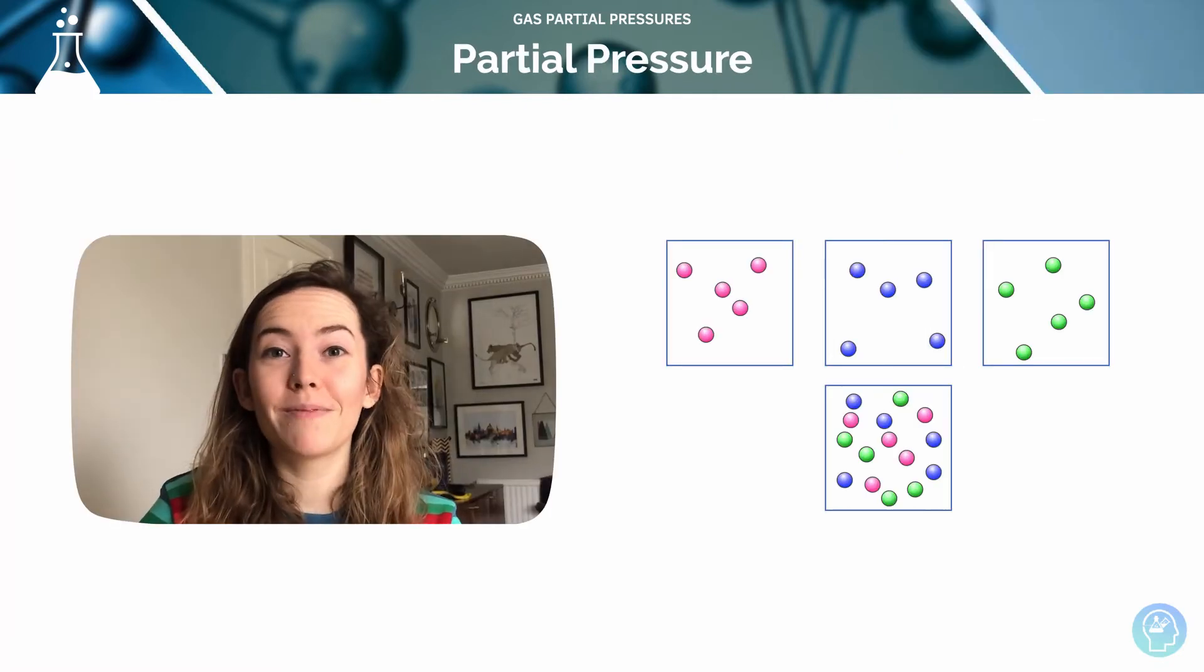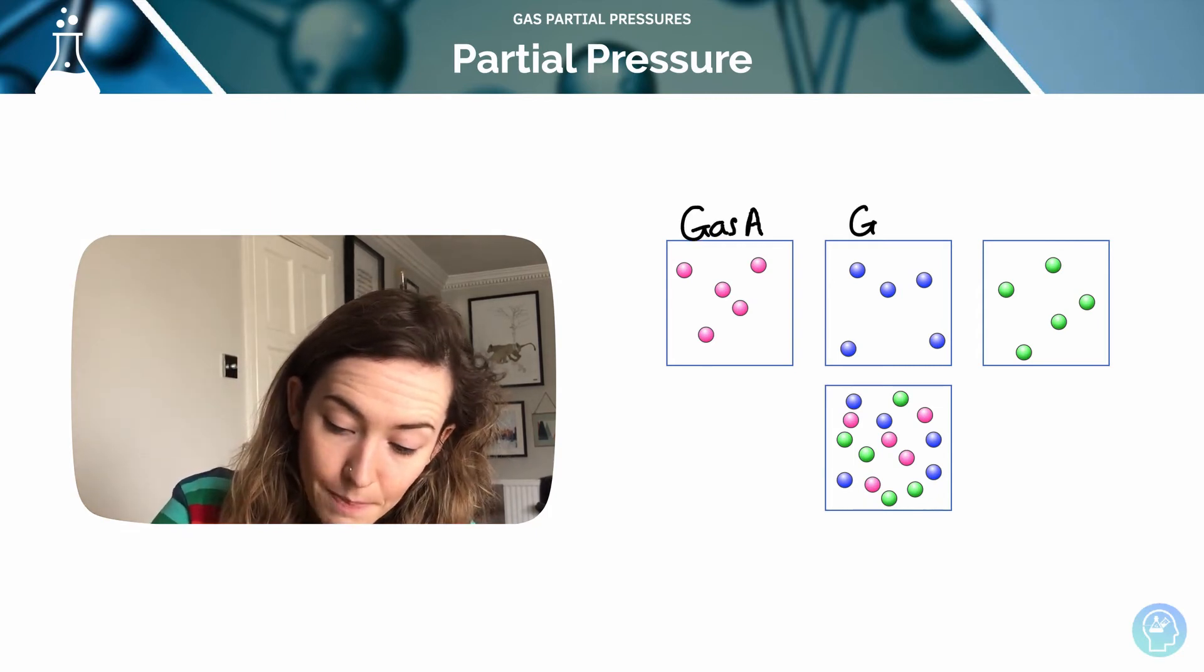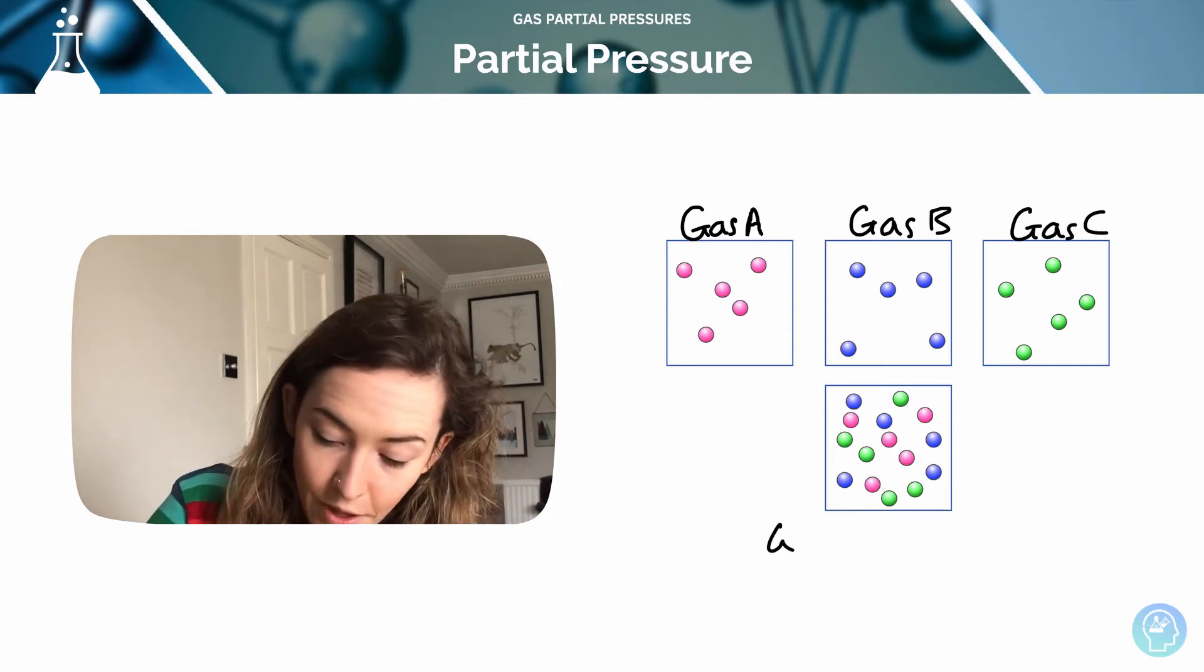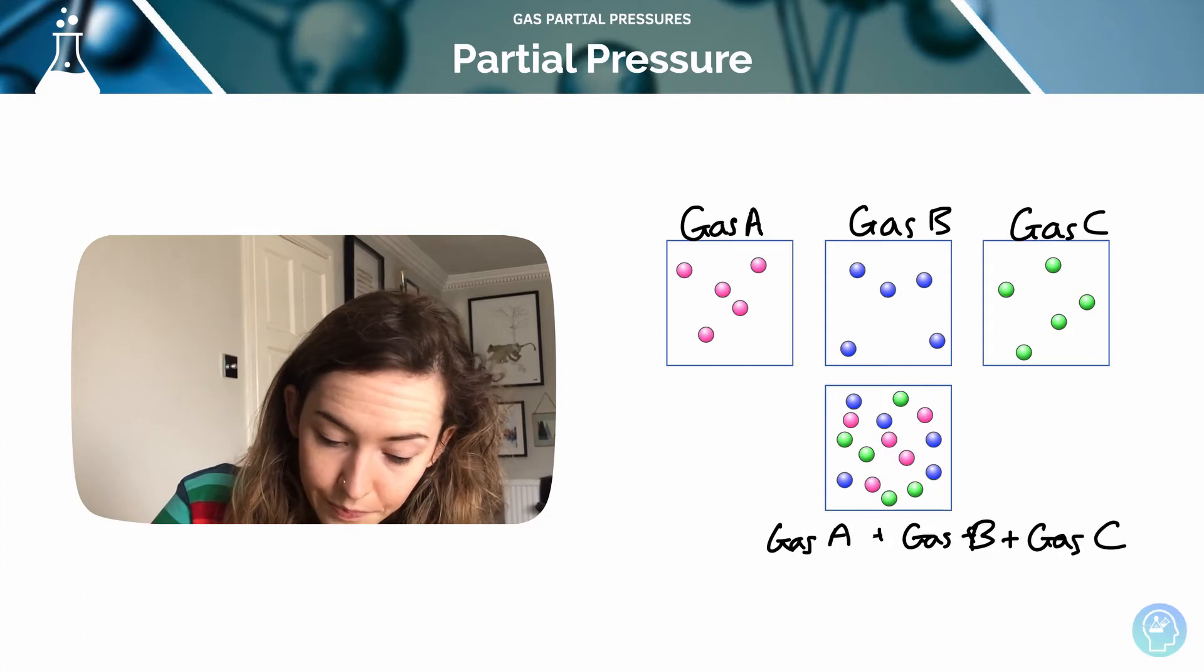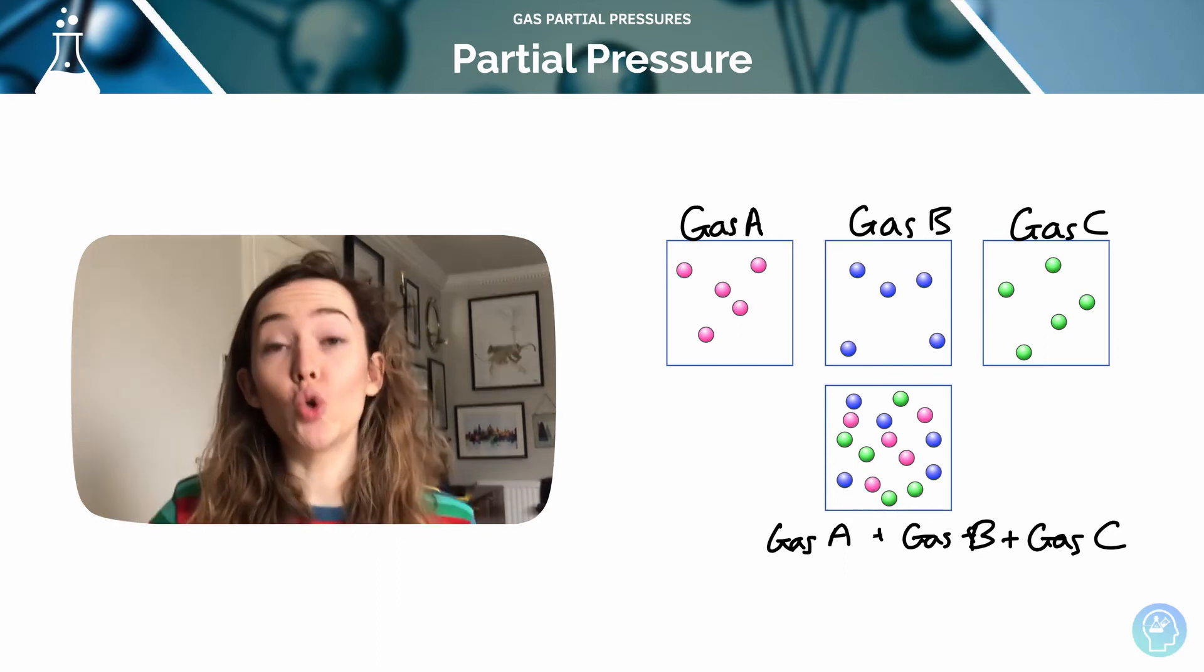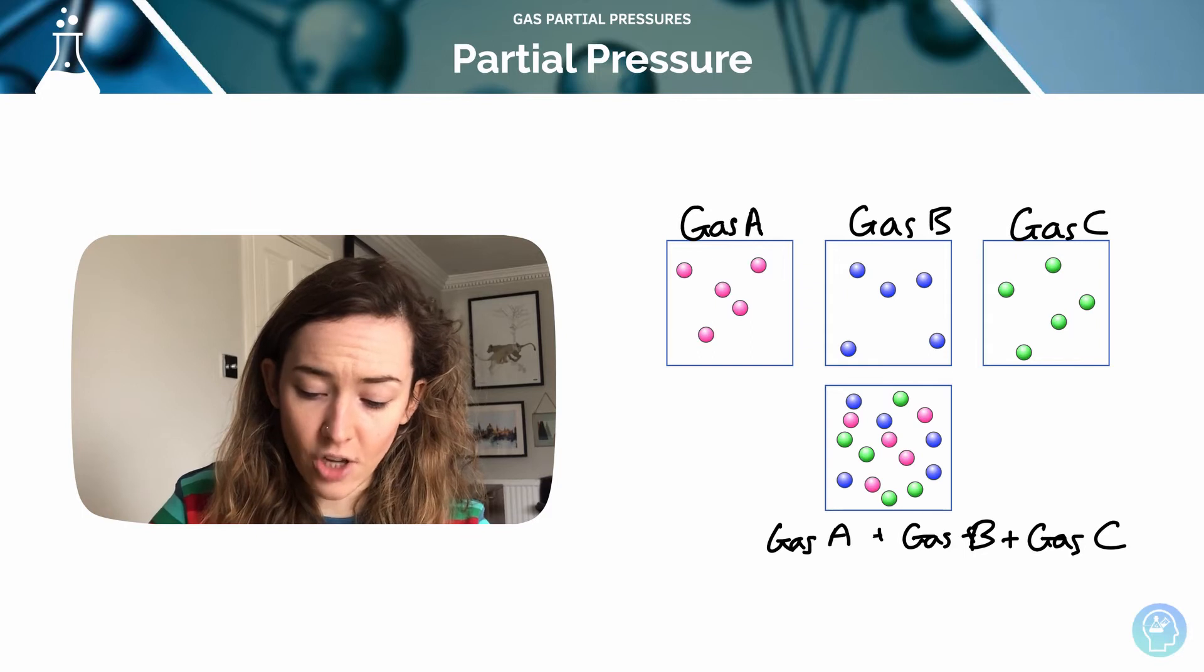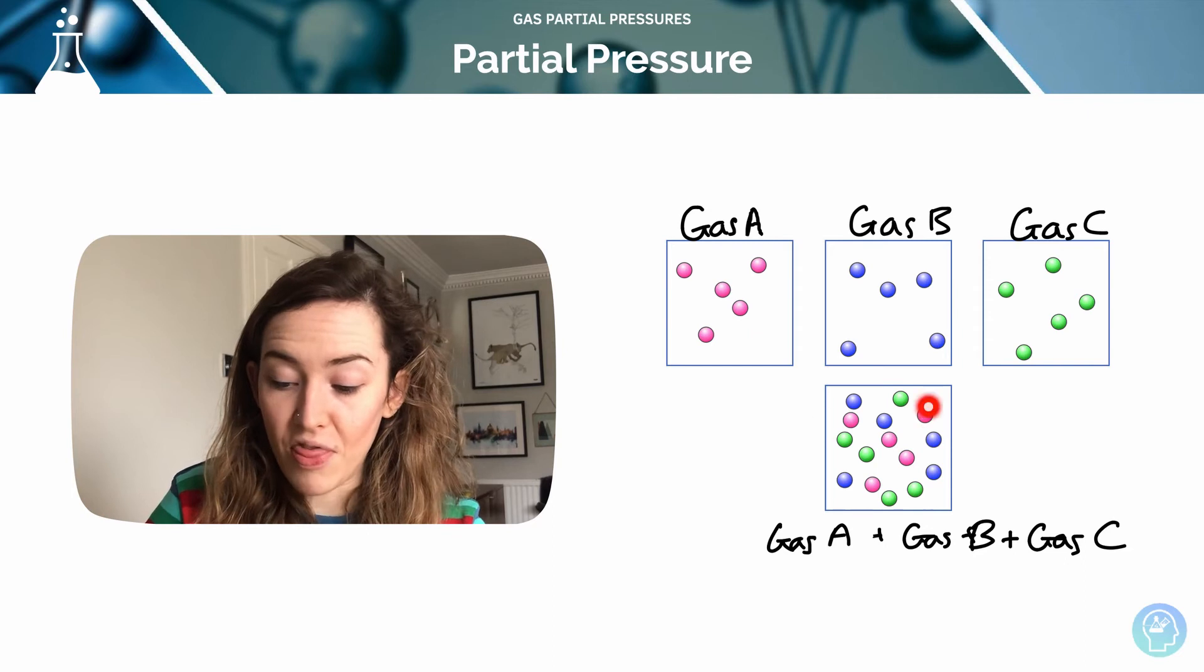What is partial pressure? Well we have gas A, gas B and gas C. And you can see at the bottom that therefore I've got gas A plus gas B plus gas C. Now partial pressure is the contribution to pressure that a single gas makes to the total pressure of a mixture of gases. So what contribution does this pink gas A make in terms of overall pressure when it's in this full mixture?